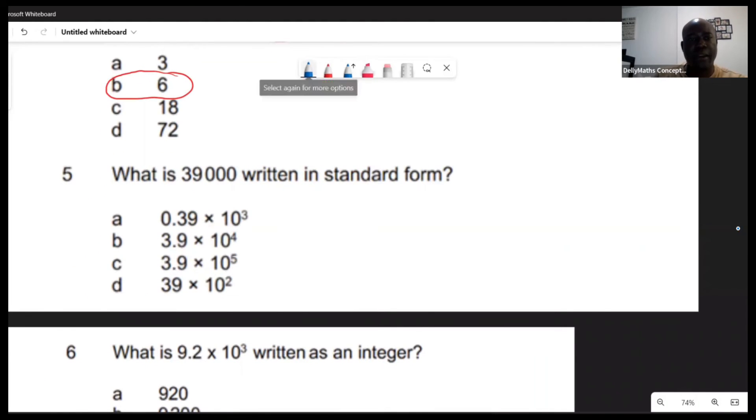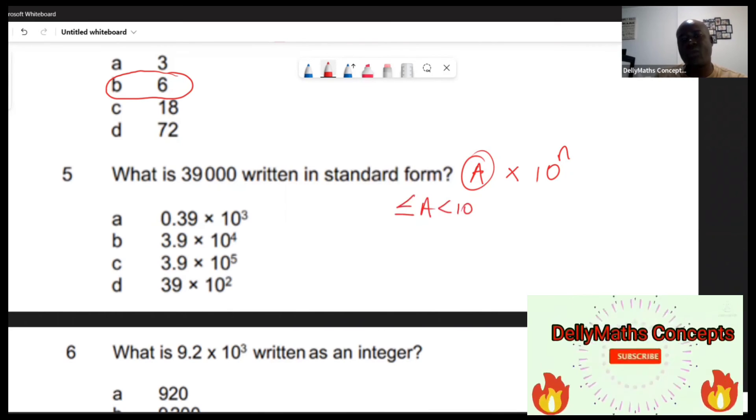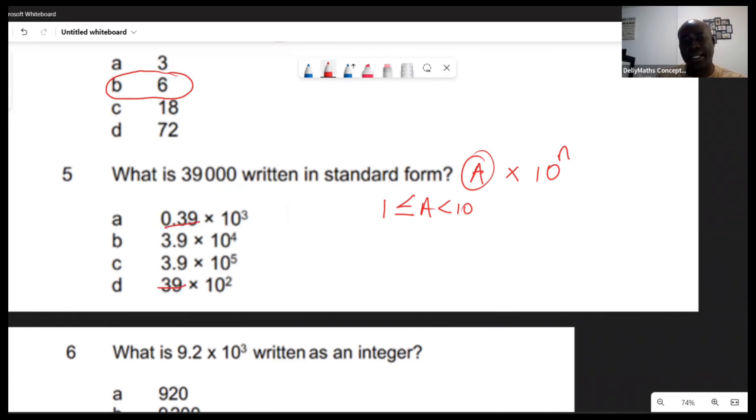Let's look at the fifth one. Number five says: what is 39,000 written in standard form? What's the framework for standard form? Standard form is written in the form a times 10 raised to the n power, where a is a number - a will be less than 10 but greater than or equal to 1. With that, it will help you to eliminate certain options because it can't be this or that. And n is an integer - a negative number, zero, or positive number. So the power will not be a fraction or anything.